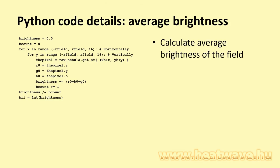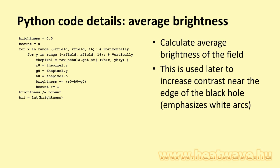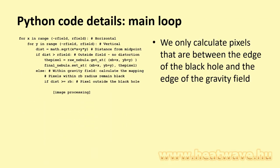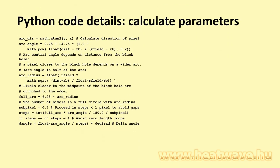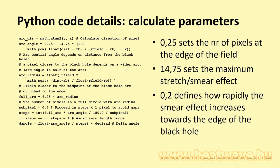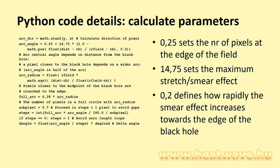Let's have a look at some parts of the actual Python code. At start, I calculate the average brightness of the affected area. This is used for an additional effect that I haven't mentioned before, to increase contrast. We will come back to this later. In the main loop, we check a square of 2 times R field by 2 times R field pixels in the target image. Those pixels that are further away from the center of the black hole than R field are left unchanged. Pixels that are closer than Rb will be pure black. Here comes the actual fun part. To process an arc in the source image, first we have to identify its direction, relative to the center of the black hole. Then we calculate its central angle, its radius, and finally the number of pixels that it contains.